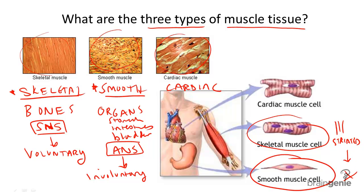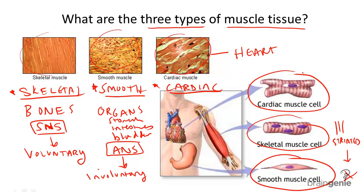Finally, the type of muscle only found in the heart is called cardiac muscle tissue. Cardiac muscle tissue is webbed to allow the heart to beat rhythmically. Cardiac muscle looks like it has both light and dark stripes, and it is like skeletal tissue, very striated, or striped.